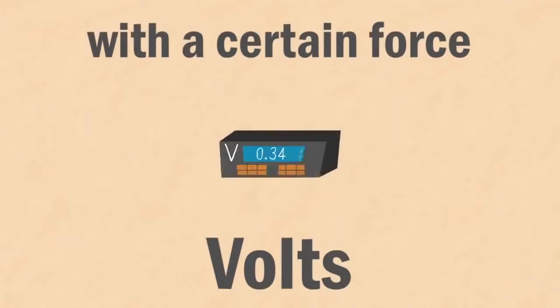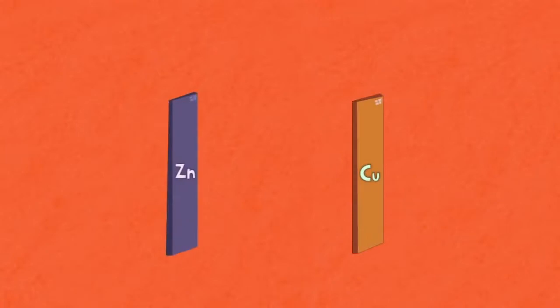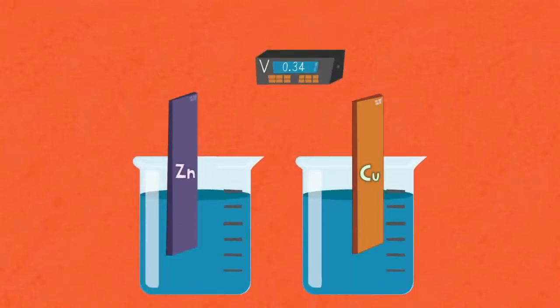When a metal gives away its electrons, they do so with a certain force. This force you measure in volts using a voltmeter. If you connect a strip of copper and a strip of zinc metal to a voltmeter in a solution of their ions...